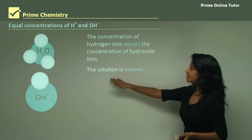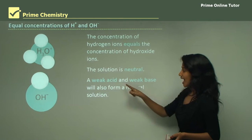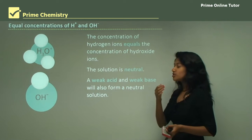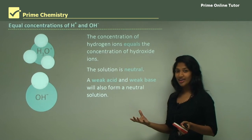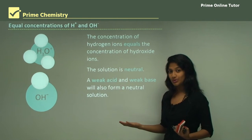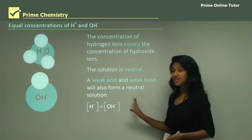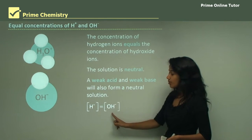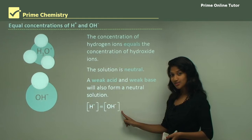The result is an equal concentration of hydrogen ions and hydroxide ions, so the solution is neutral. A weak acid and a weak base also form a neutral solution because both only partially ionize, producing equal amounts of hydroxide and hydrogen ions. In shorthand: [H⁺] = [OH⁻].